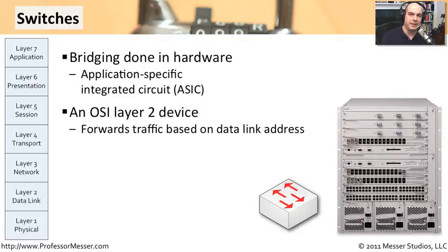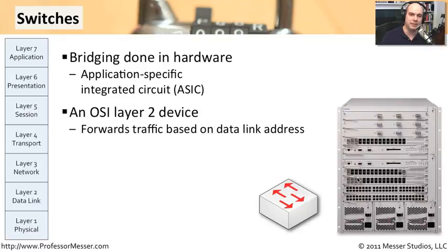Switches decide where traffic goes based on the data link control address of a device. Most of the time on an Ethernet network, that's the MAC address — the network card address of the different devices. There's a big table inside these machines that knows exactly who is plugged into the device. Whenever it needs to decide which way packets go, it looks at the destination MAC address, references the table, and says: that particular device is on port 7, so I'm going to send the traffic to port 7.